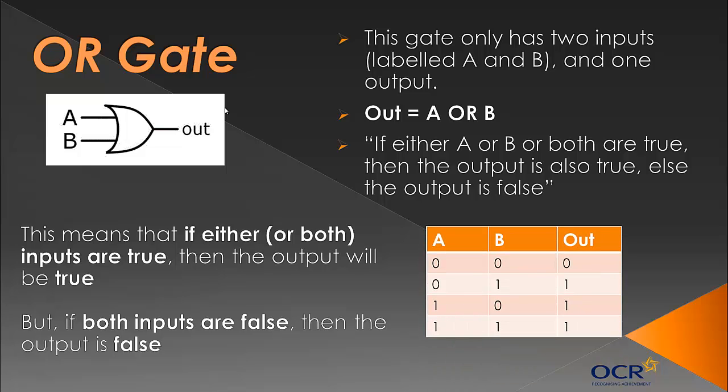If we look at our truth table for this, you also need to be able to fill in and complete truth tables for simple AND, OR, and NOT gates and circuits. Here we've got both inputs are false. So if both inputs are false, then the output is false. But the OR gate is asking if one of them is true, then the output is true. And you can see in these two examples, one of the inputs is true, and therefore the output is also true. But here it can also be both. So this would be the same as the AND rule, but we're looking at either. So it will look at the first input, sees that it's true, and it will ignore the second input and just automatically output true.